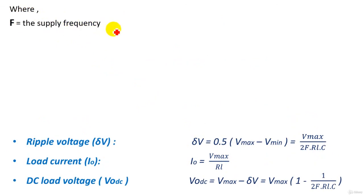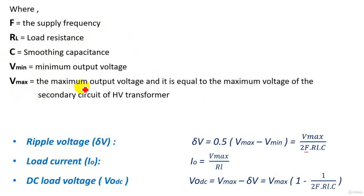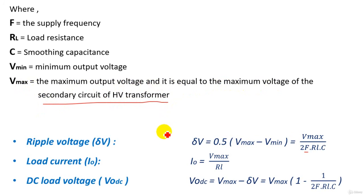Where f is the supply frequency (50 Hz or 60 Hz), R_L is the load resistance, C is the smoothing capacitor used to reduce the ripple voltage, V_min is the minimum output voltage, and V_max is the maximum output voltage equal to the peak secondary voltage of the high voltage transformer. This completes our understanding of the half-wave rectifier circuit. See you in the next lecture.